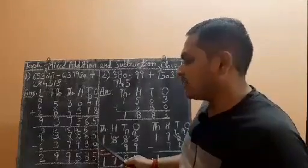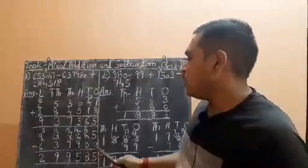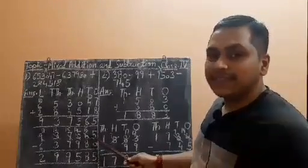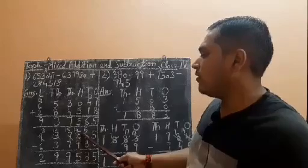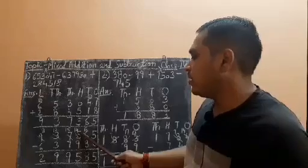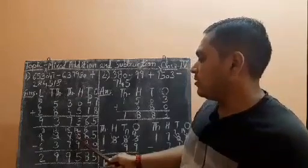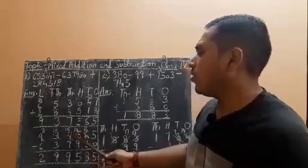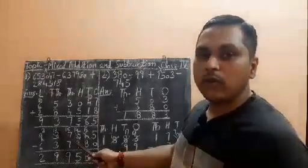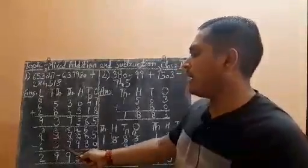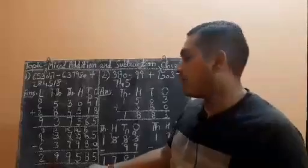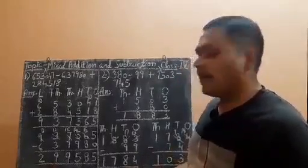Now 6 minus 8: since 6 is smaller, borrow 1 from 5, making it 16. 16 minus 8 is 8, and the 5 becomes 4. Borrow 1 from 7, making it 14. 14 minus 9 is 5, and that digit becomes 6. Borrow again, making it 16. 16 minus 7 is 9, and that digit becomes 2. Borrow 1 from 9, making it 12. 12 minus 3 is 9, and that digit becomes 8. 8 minus 6 is 2. So our final answer is 2,99,585.